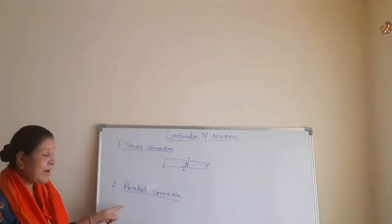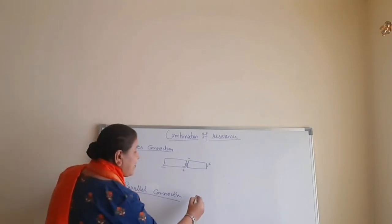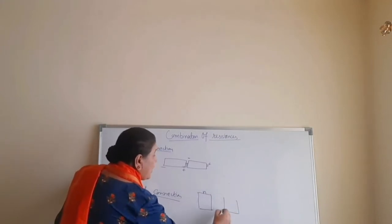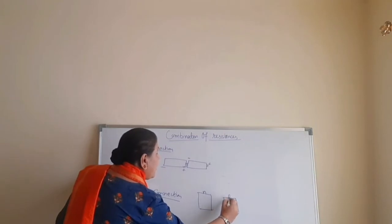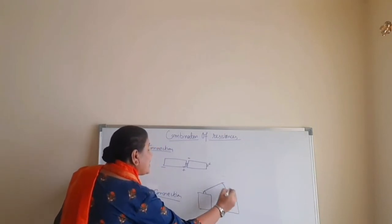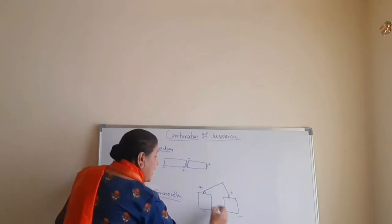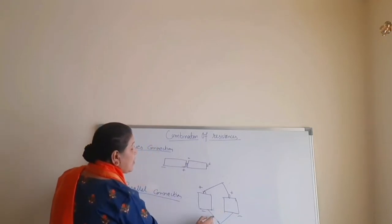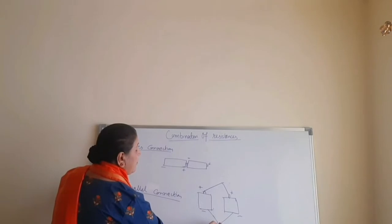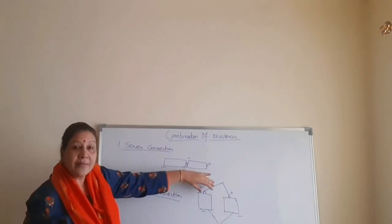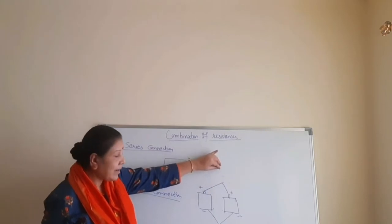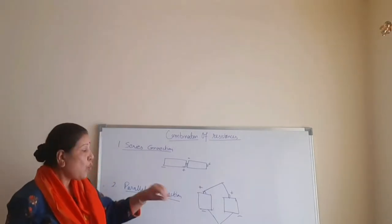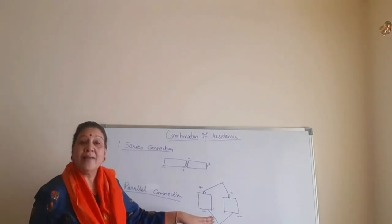Whereas in parallel connection, if I have the same cells, all the positives are connected to one side and all the negatives to the other side. This type of combination is called parallel combination, where same kind of terminals — all the positive terminals are connected to one side and all the negative terminals are connected to the other side.